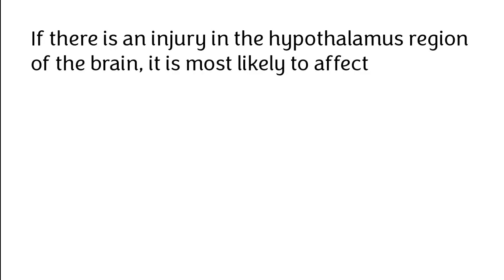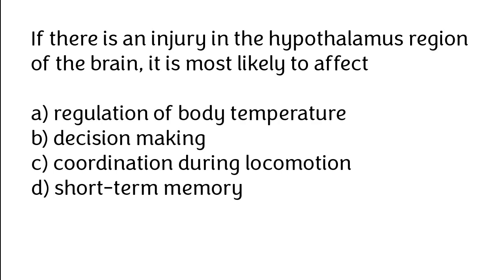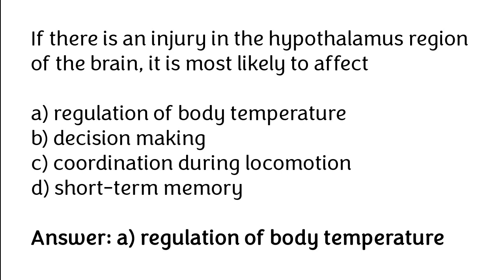If there is an injury in the hypothalamus region of the brain, it is most likely to affect: regulation of body temperature, decision making, coordination during locomotion, or short-term memory. The correct answer is option A: regulation of body temperature.